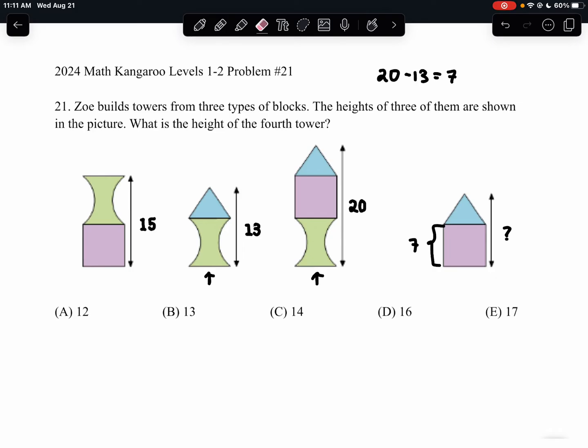Similarly, we can now direct our attention to the first structure, right? Which has the green piece and the purple that does not have the blue. And when we compare that to the one that has all three, we see that 20 minus 15 is equal to 5.